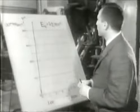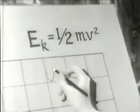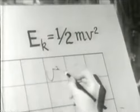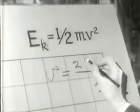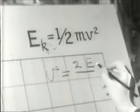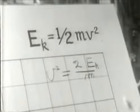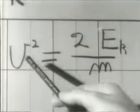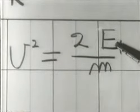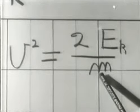Come vedete, per le velocità a cui siamo abituati, il quadrato della velocità è proporzionale al rapporto fra energia cinetica e massa. Perciò, per ottenere un'altissima velocità per una data energia, dovremmo usare particelle di massa piccola.